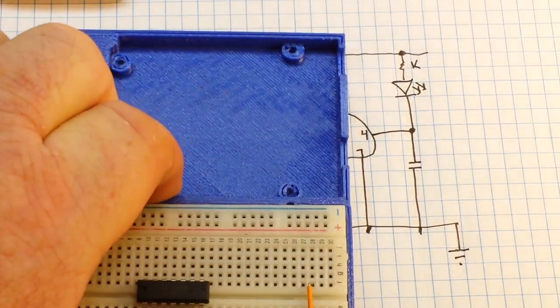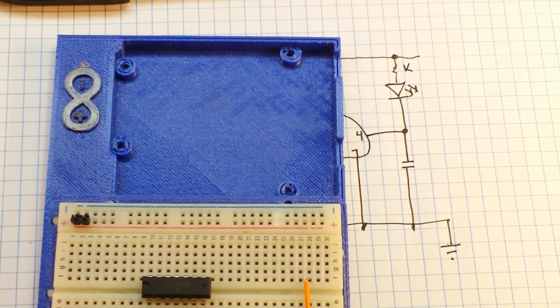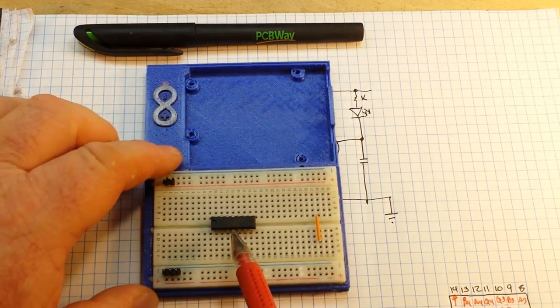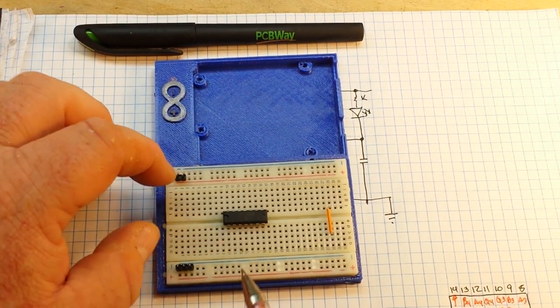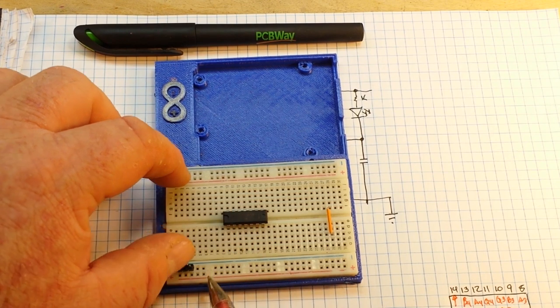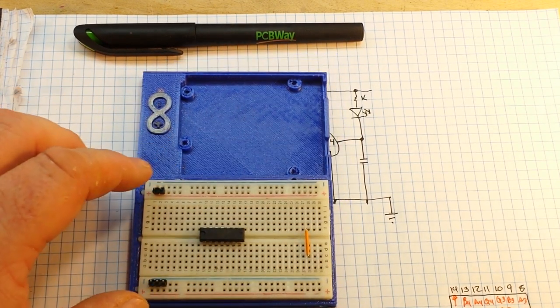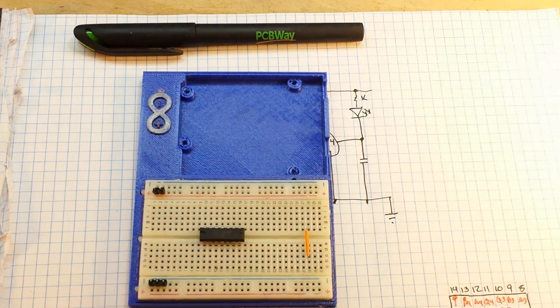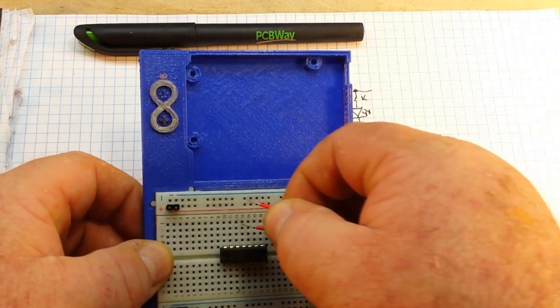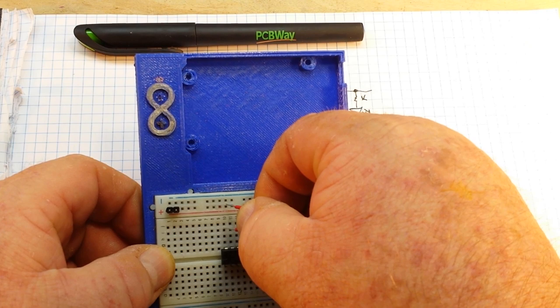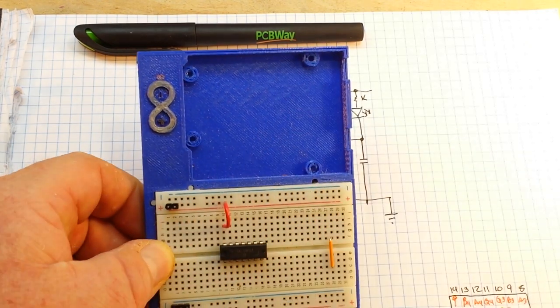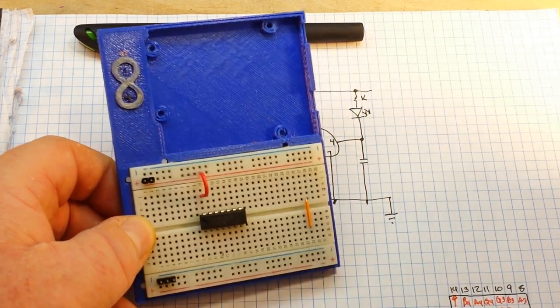Let's bring in our breadboard. I have the chip here. We have a positive rail, the red. The negative rail, the blue. And this jumper over here is just for something else so don't worry about it, we'll get to it. So pin 14, that's this one here, that goes to VCC.